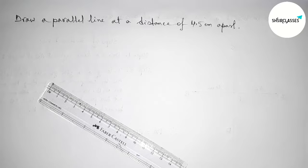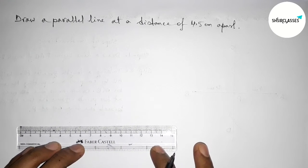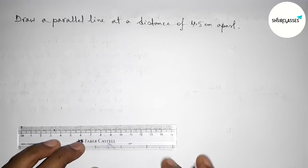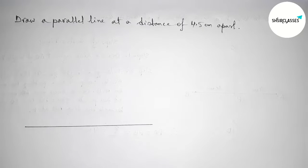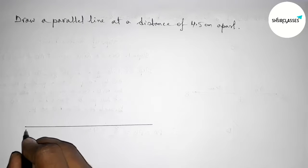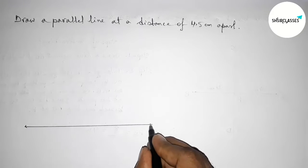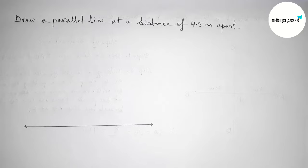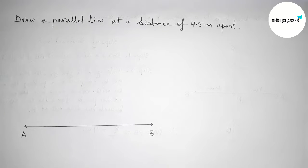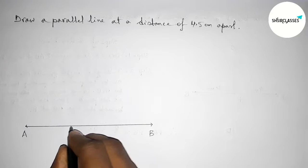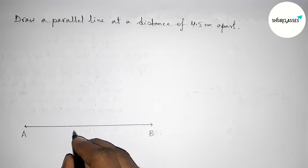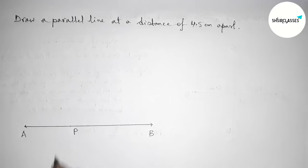First of all, with the help of a scale, we draw a line segment of any length, taking arrow marks on both sides. We label this line A and B. Next, we have to take a point P here on the line AB. You can take this point anywhere on the line as your choice.